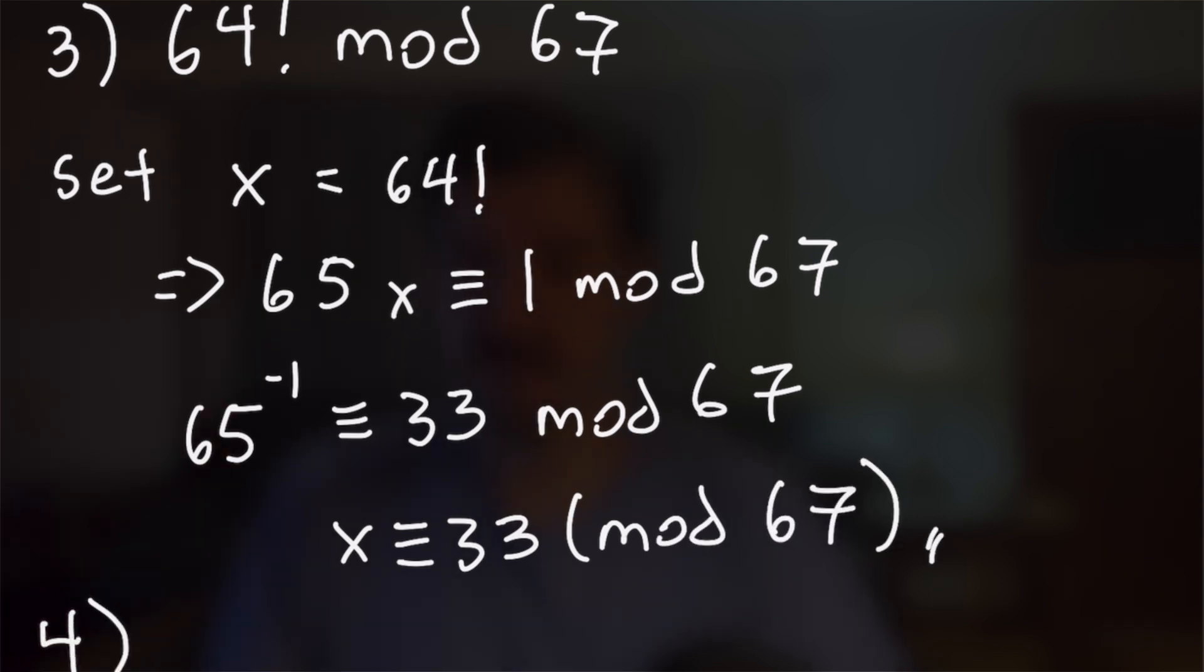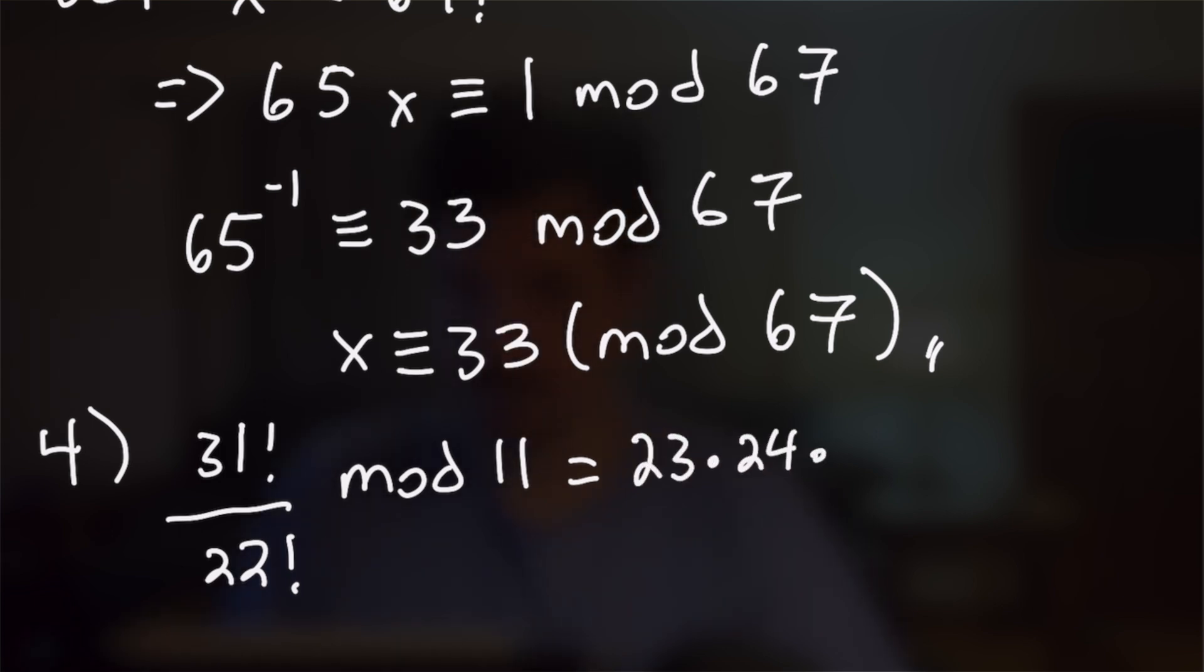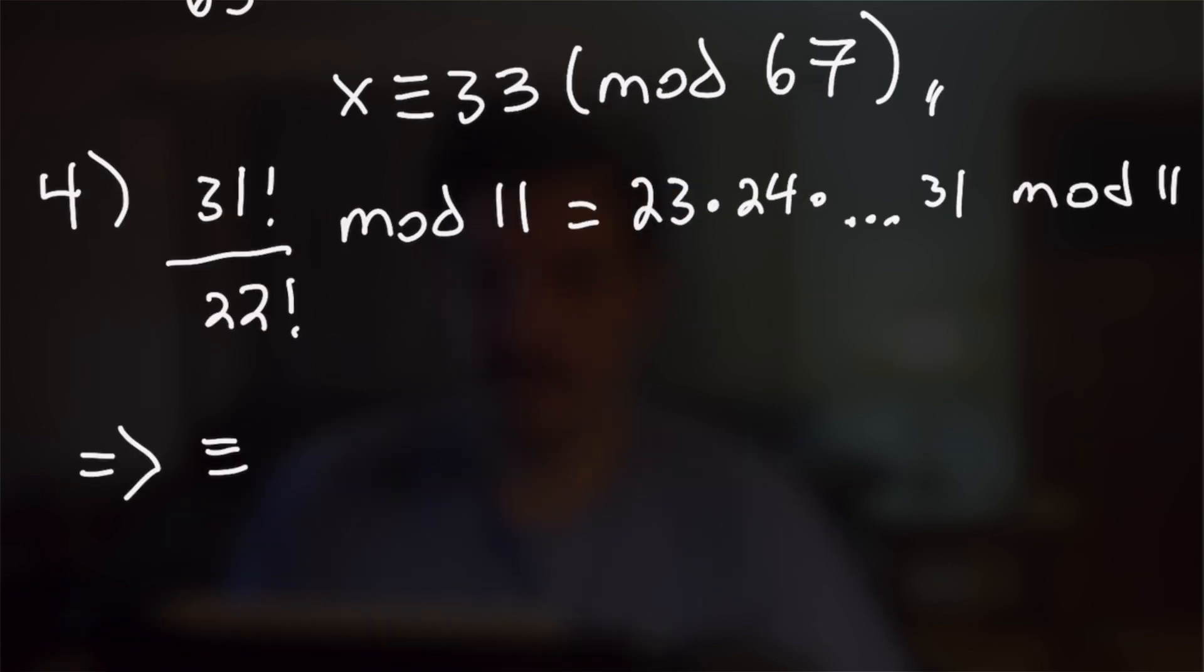Now for number four, we're also going to have to use some tricks here. So first, we're going to cancel out our factorial in the denominator there and rewrite our numerator as the product of 23 all the way up to 31. We can reduce each of those mod 11 to get 1 times 2 all the way up to 8, which we can write as 8!.